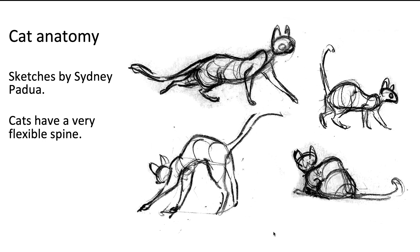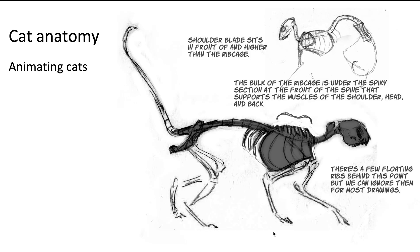Dogs obviously have a very flexible spine; horses and cows have a very inflexible spine. These are some sketches by my friend and colleague Sydney Paggio, a very brilliant animator and published author who is an expert on quadruped animation. She did these sketches of cats with a very super flexible spine. If you think about a cat being dropped from a height — cats can spin themselves around and twist their spine so they land on all fours.